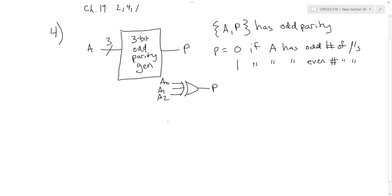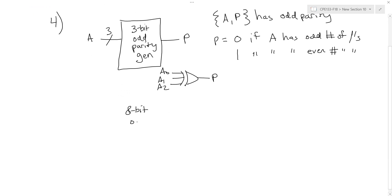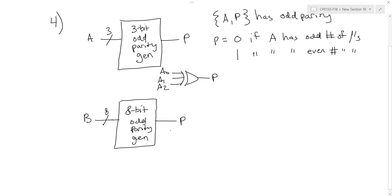For problem 4, we want to design an 8-bit odd parity generator using the iterative modular approach — that is, reusing the 3-bit module multiple times rather than creating a new truth table or K-map from scratch. So I'll connect each of my 8 input bits into instances of the 3-bit module. Looking at this again, I realize we made a mistake: an XOR gate outputs a 1 when there's an odd number of 1s in the input, but our parity generator needs to output a 1 when there's an even number.